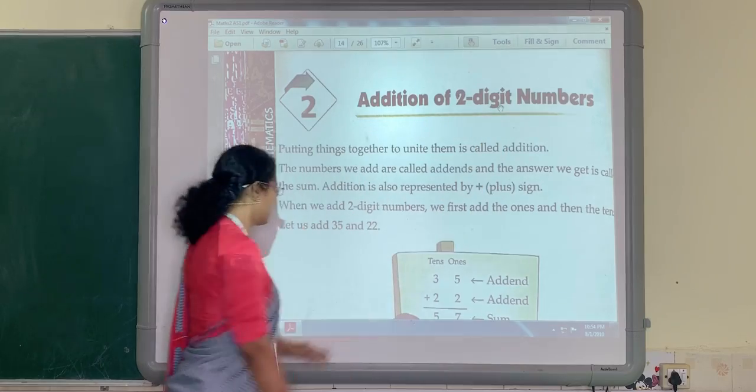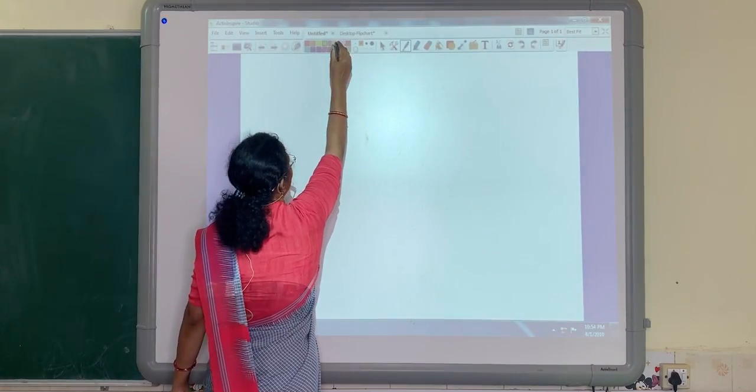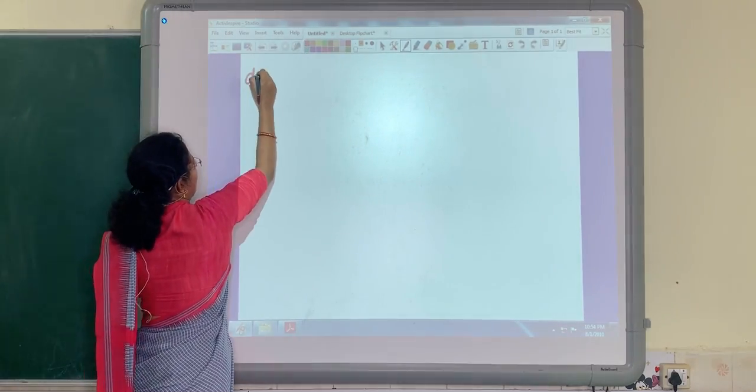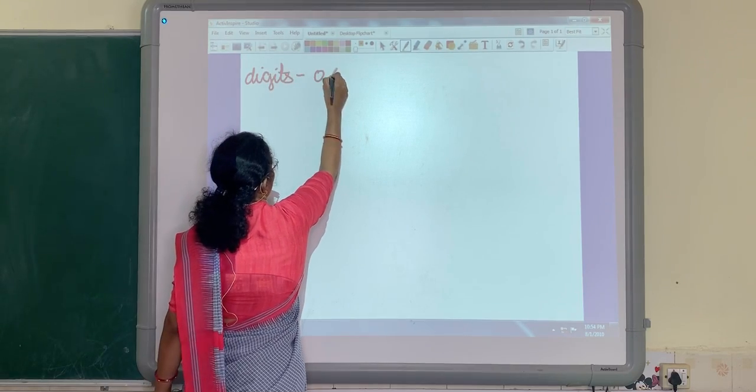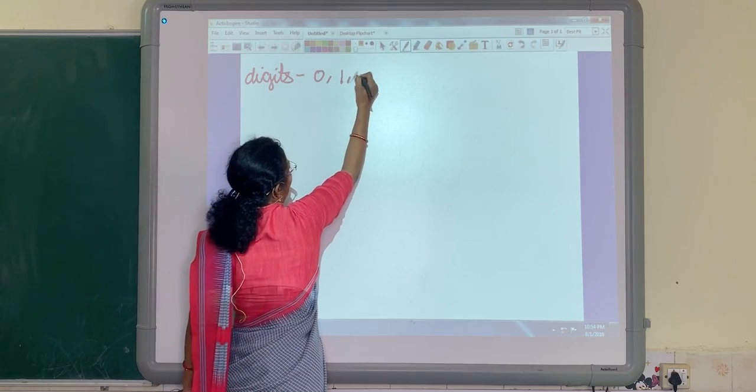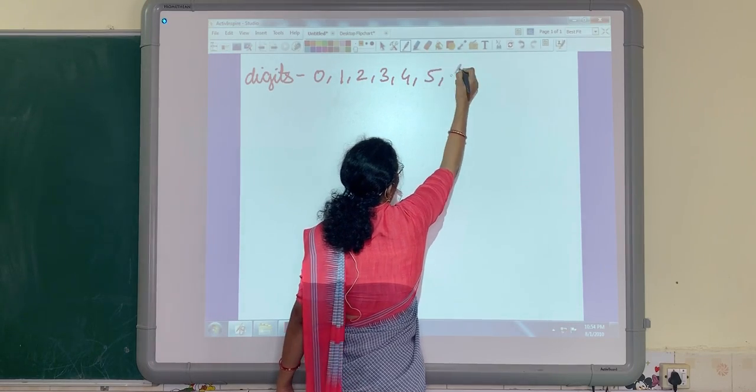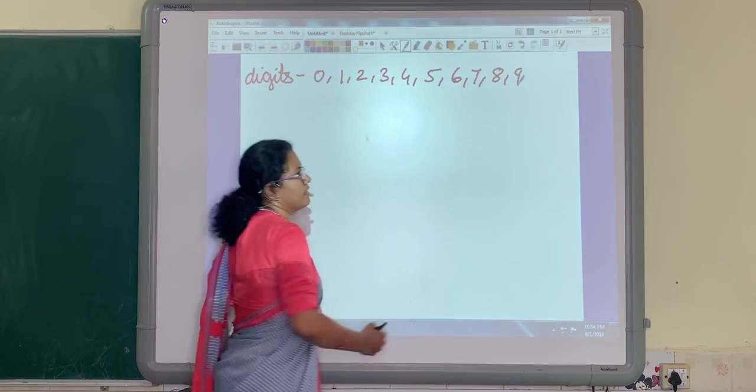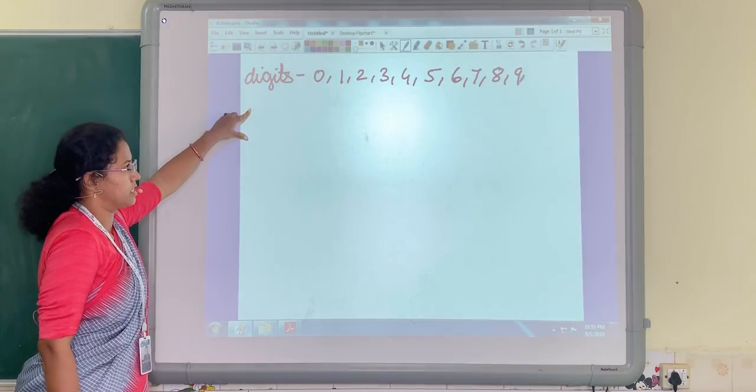What are the digits? Let's recall. Digits are numbers from 0 to 9: 0, 1, 2, 3, 4, 5, 6, 7, 8, 9. These are digits. And in math, we use digits to form numbers.